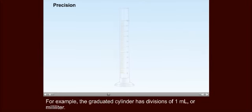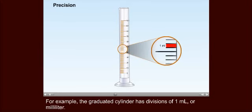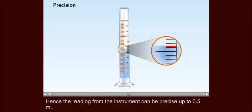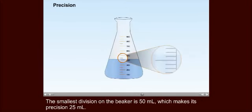For example, the graduated cylinder has divisions of 1 ml or milliliter. You can measure an object to within 0.5 ml with this device. Hence, the reading from the instrument can be precise up to 0.5 ml. The smallest division on the beaker is 50 ml, which makes its precision 25 ml.